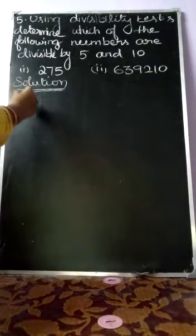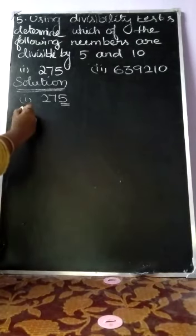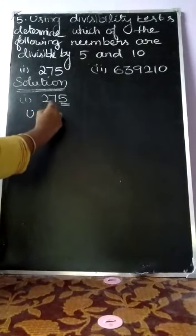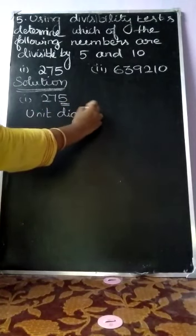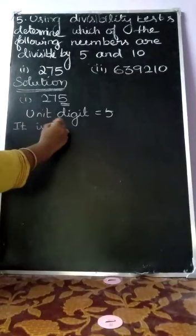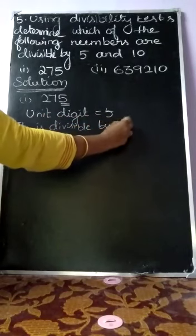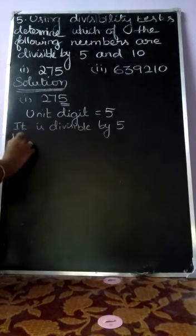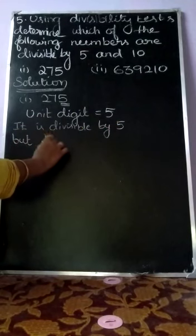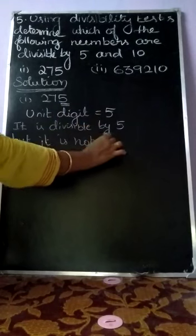The first subdivision is 275. The ending number is 5, so it is divisible by 5. But it is not divisible by 10, because the ending number is not 0.